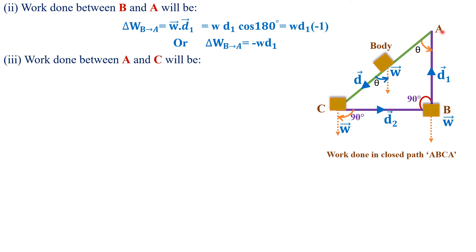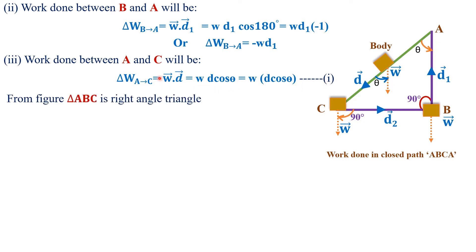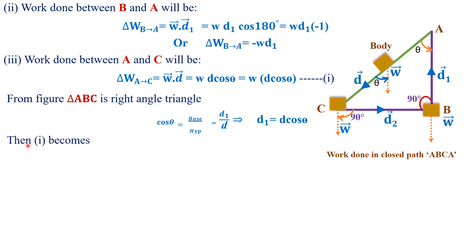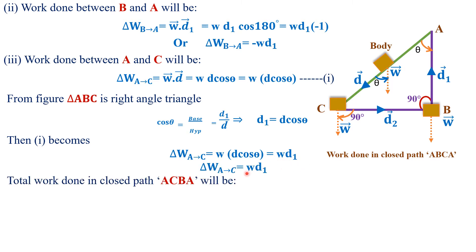Work done from A to C equals w dot d, which equals w·d·cos θ. From triangle ABC, which is a right-angle triangle, cos θ equals base over hypotenuse, where base is d1 and hypotenuse is d. So d1 equals d·cos θ. Substituting, work done from A to C equals w·d1.